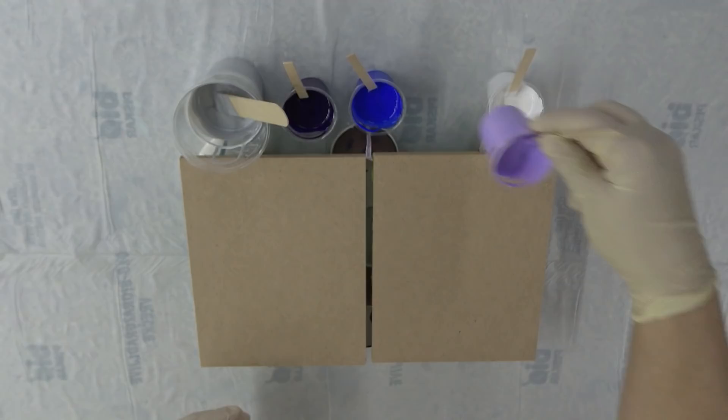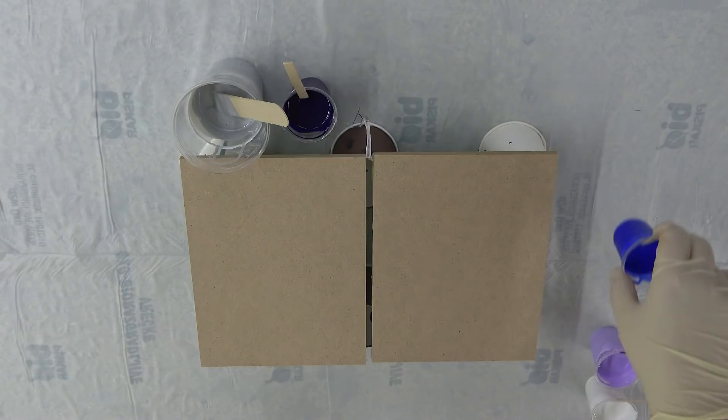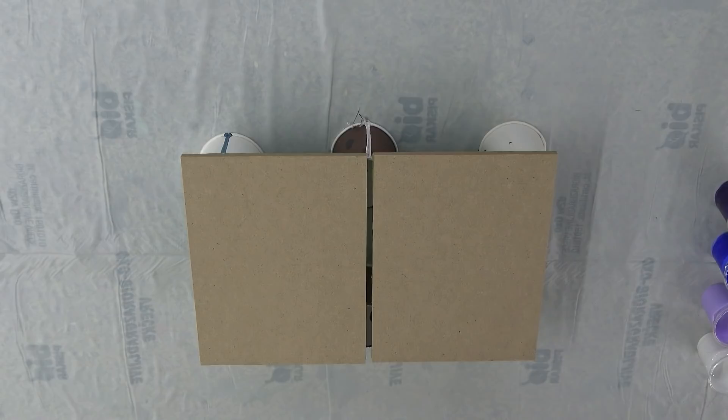This is Winsor & Newton Pale Violet. I will put them there, and Amsterdam Titanium White, Amsterdam Ultramarine, and Amsterdam Permanent Blue Violet. I will do double dip.